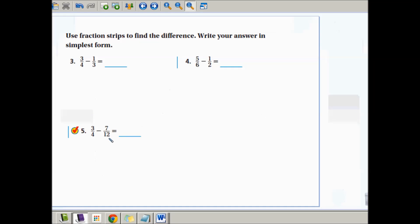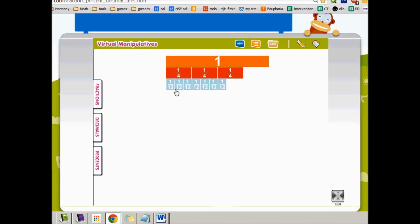The next one is 3 fourths minus 7 twelfths. Okay. So I have my 3 fourths here and my 7 twelfths here. So that's 3 fourths minus 7 twelfths. I need to figure out what goes in this little part here. I bet a couple more twelfths would fit in here. There's 1 and 2. So this gives me, this is my answer, 2 twelfths. It's correct, but it's not simplified.